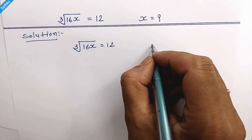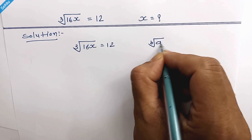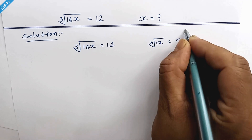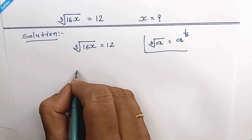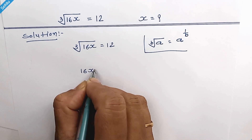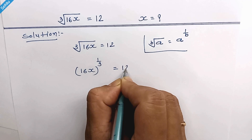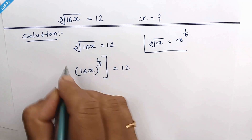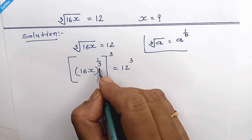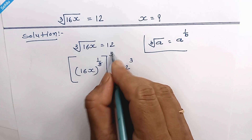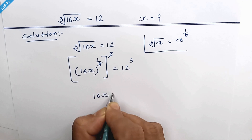Now what we are going to do is, when we have b root of a, then it can be written as a to the power 1 over b. So here, if we raise 3 as an exponent on both sides, these two can multiply, and they get cancelled out. So we have 16x.